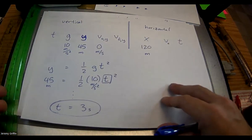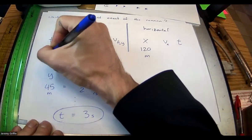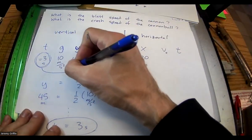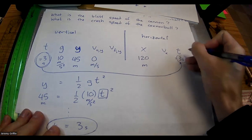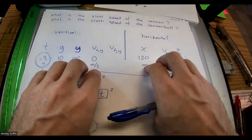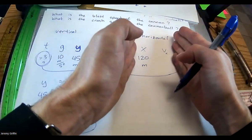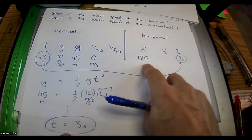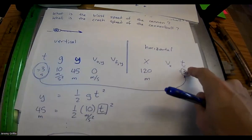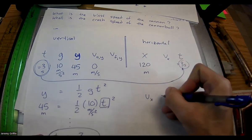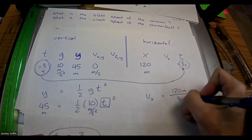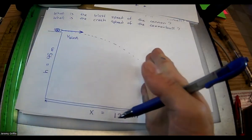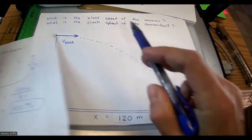Vertically this is an identical scenario to just dropping a ball — it takes 3 seconds to fall 45 meters starting from rest. And that 3 seconds is the one variable you're allowed to transfer between vertical and horizontal in this framework, because time is a scalar. So it's 3 seconds from a horizontal point of view too. All the other variables are vectors and stay strictly in their direction, but time is shared. So we now know t = 3 seconds horizontally.